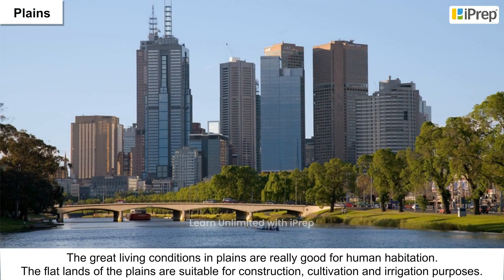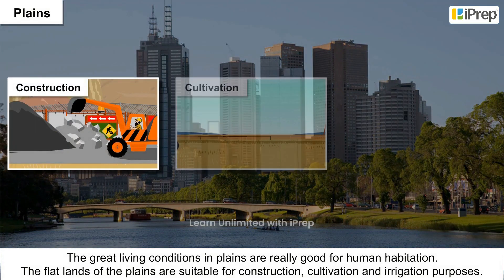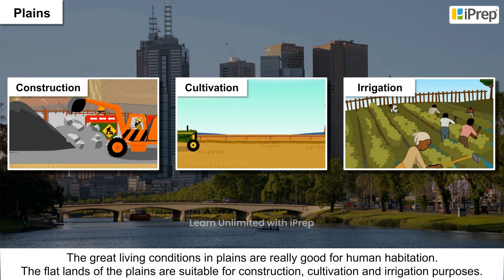The great living conditions in plains make them really good for human habitation. The flatlands of the plains are suitable for construction, cultivation, and irrigation purposes.